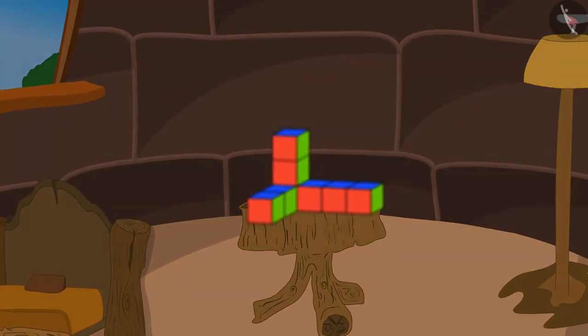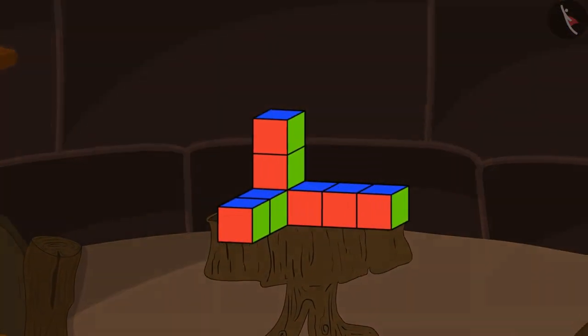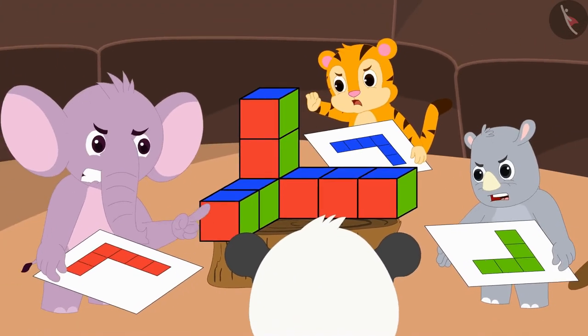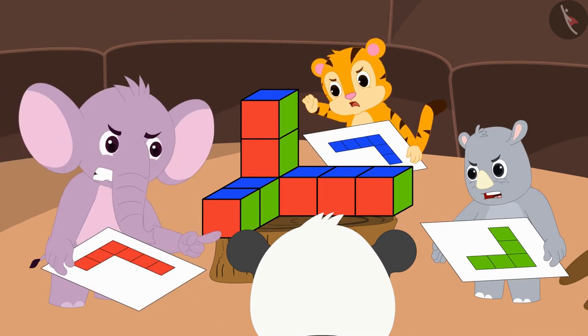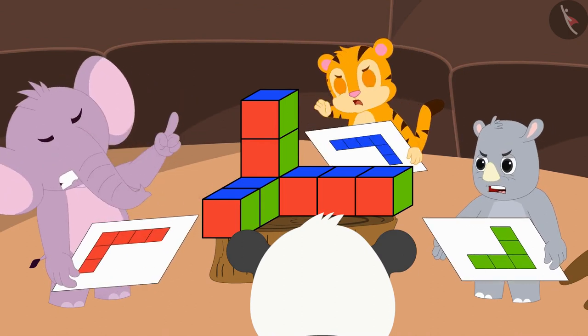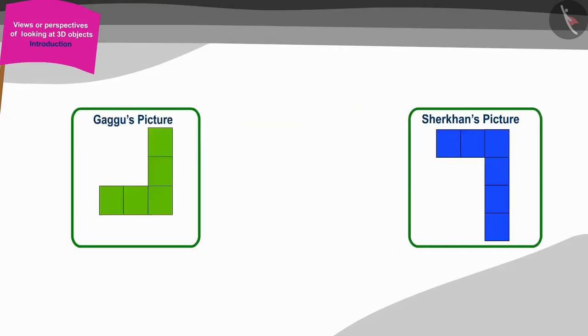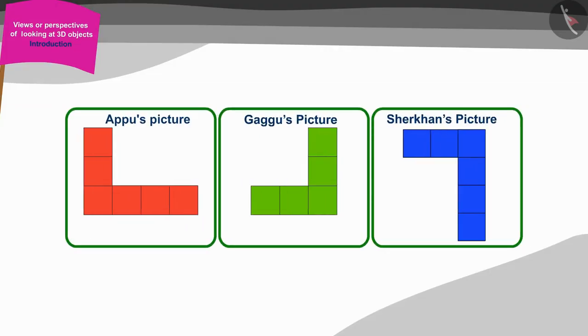Golu made such a shape out of the boxes. Now, the three friends started quarreling about whose picture best matches the shape made by Golu. What do you think is the correct answer?